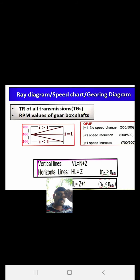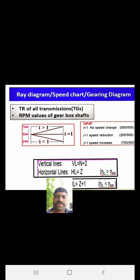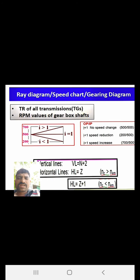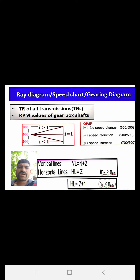For the ray diagram: vertical lines = n+2, and horizontal lines = z if n_z ≥ n_em, or horizontal lines = z+1 if n_z < n_em. Remember this rule for drawing the ray diagram, speed diagram, or gearing diagram.